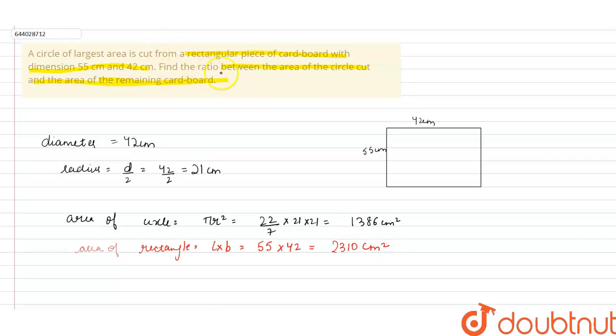Now the question says that we have to find the area of the remaining cardboard. So area of remaining cardboard will be equal to 2310 minus 1386, that is area of rectangle minus area of circle.